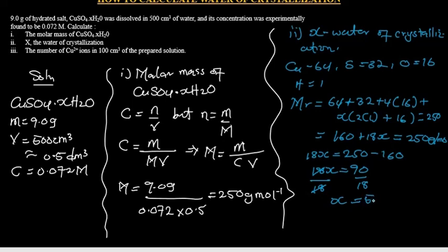Now we know what our complex salt looks like: copper sulfate SO₄·5H₂O. This particular salt is copper(II) tetraoxosulfate pentahydrate. If you don't know how to name this kind of salt, you can check our playlist on inorganic chemistry to learn how to name complex inorganic salts.